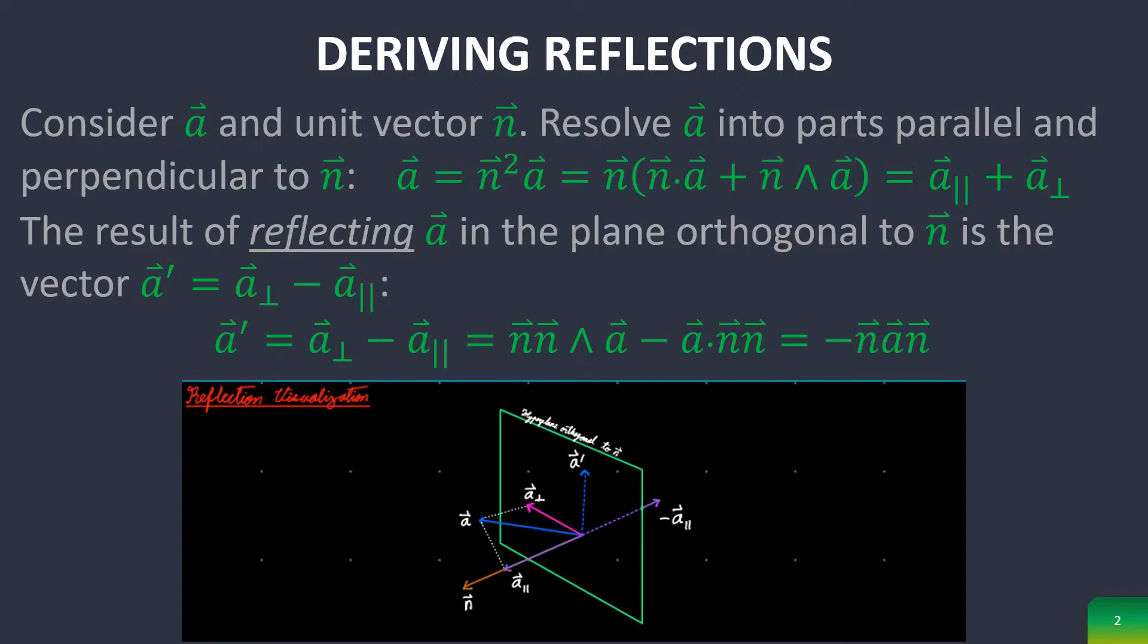First, you put a into parts parallel and perpendicular to n, which is achieved through the following equation and steps. The result of reflecting a in the plane orthogonal to n is the following vector.